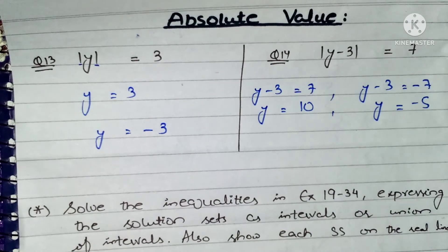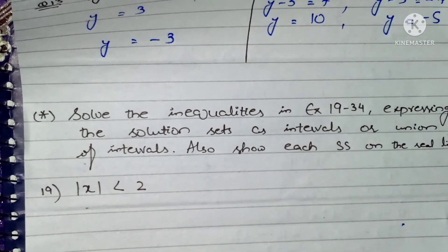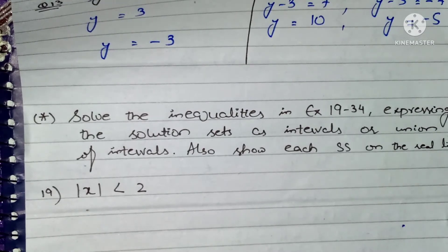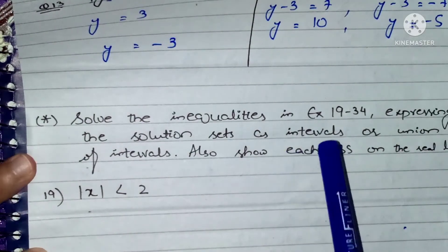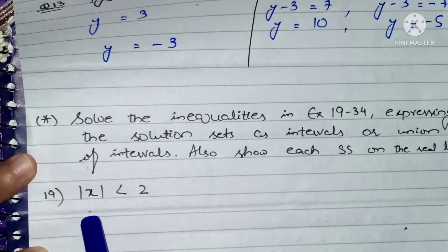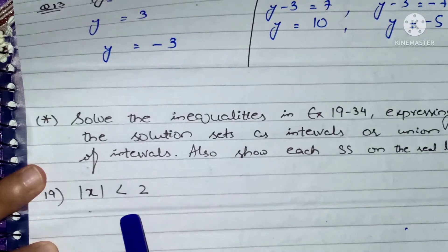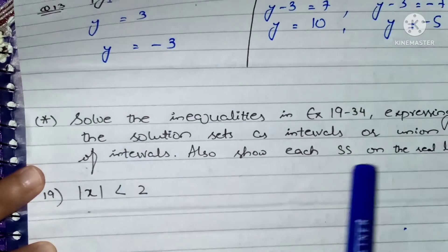It will be very basic. You will try it yourself. Now we start with question number 19. Solve the inequalities in exercise 19 to 34, expressing the solution sets as intervals or union of intervals, and also show each solution set on the real line. We will make intervals when the mod is less than or less than equal. If we have mod and x is greater than or greater than equals, then we will make union of intervals.